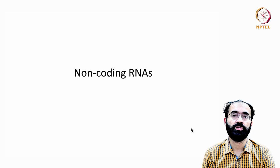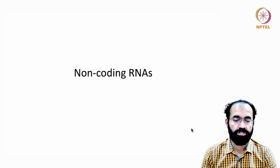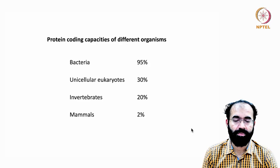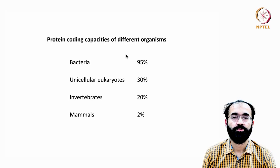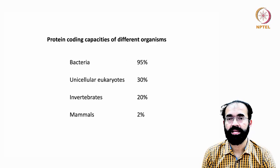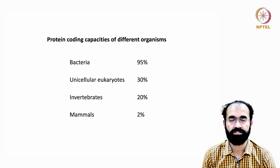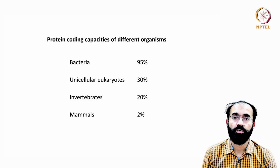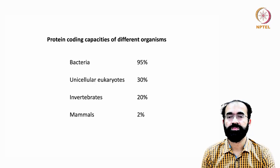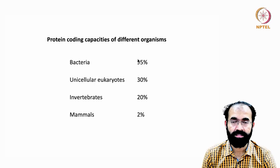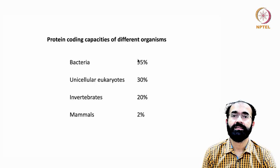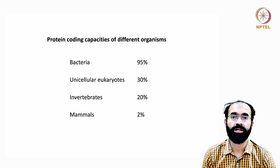Non-coding RNAs can have huge implications in gene expression events, which makes this molecule so important in biology. The protein coding capacities in various organisms vary based on their genome size. Typical bacteria like E. coli have a genome of 4MB — that is 4 megabase or 4 million bases — and around 95% of this 4MB has protein coding capability.